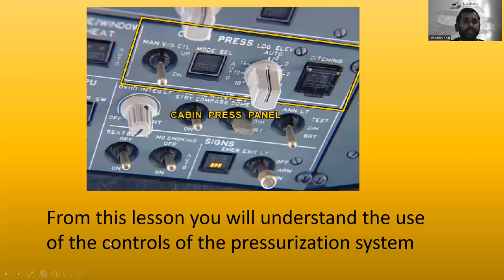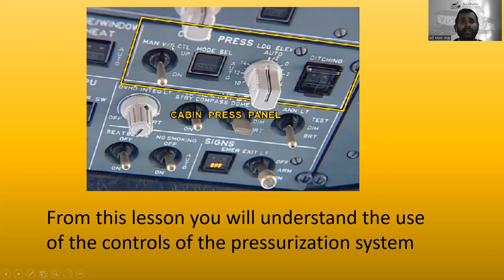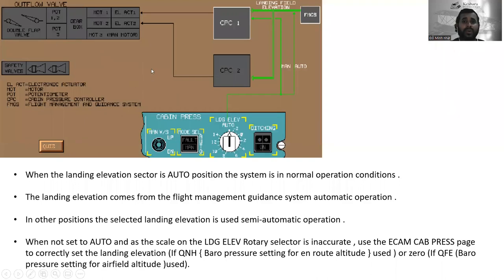From this lesson, you will understand the use of the controls of the pressurization system. This is the pressurization control panel. Here is the manual vertical speed control toggle switch, the mode selector, the landing elevation selector, and the ditching push button.